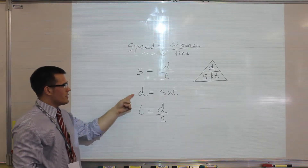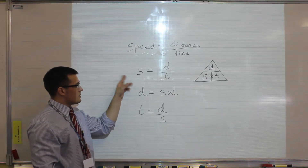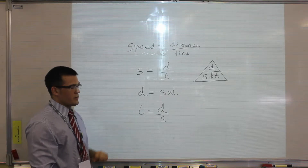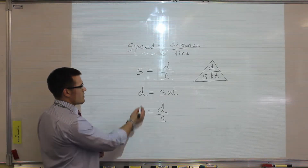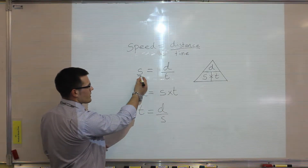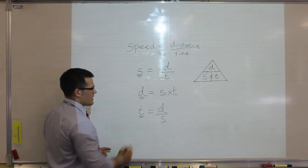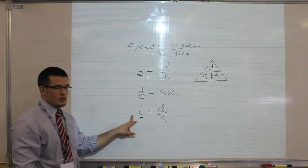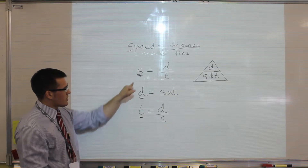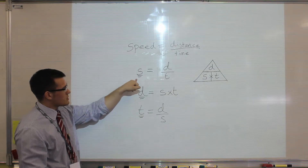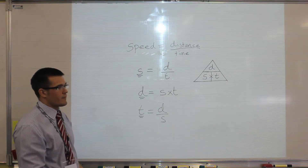We now have three equations to calculate speed, distance, or time. The important thing to recognise is that there is only one thing on one side of the equation — that is the subject of the equation, what we are calculating. So in these three equations we are calculating speed, distance, and time respectively.